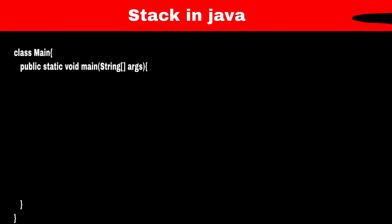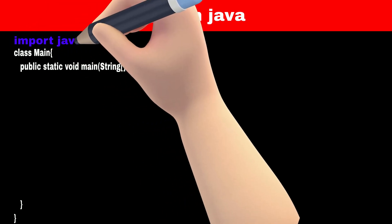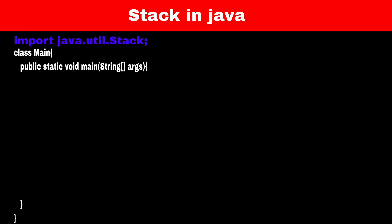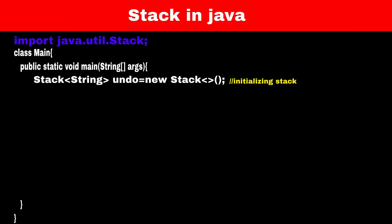Now let's see how we can use the built-in stack in Java. Java provides a Stack class which is part of the java.util package, so we have to import it. Then we declare and initialize an object of the Stack class with a data type in angle brackets. The syntax is like declaring a normal object of a class: first the class name, then the data type in angle brackets, then the name of the object, and after the equals operator, the constructor of the Stack class. Instead of String, we can also add objects of any class by replacing String with the name of that class.